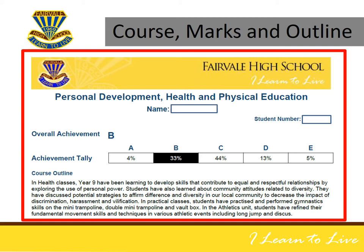The section that is shaded in black clearly identifies the level of achievement that a student earned. In this example, the B grade section is shaded and 33% of all students who studied this course achieved this same grade. Underneath this grade bar, you will be able to read the course outline, which details exactly what the student has been learning in class over the semester.